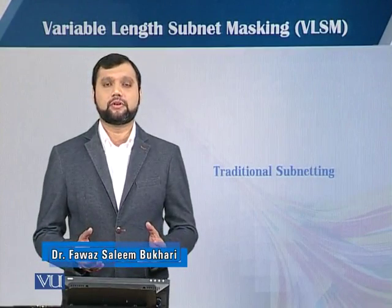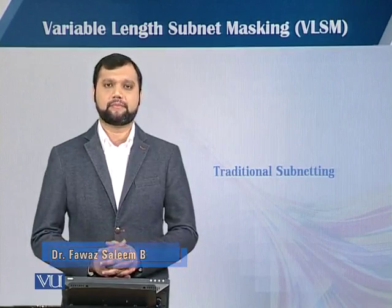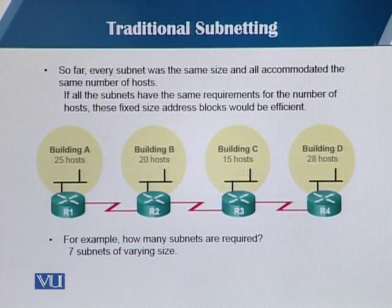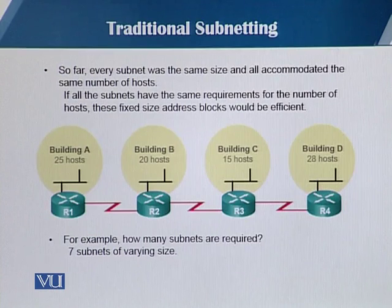Now we will look into Variable Length Subnet Masking. In traditional subnetting, every subnet was the same size and all accommodated the same number of hosts. If all the subnets have the same requirement for the number of hosts, these fixed-size address blocks would be sufficient.